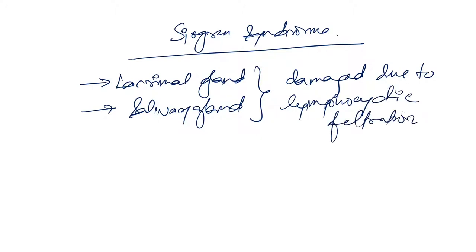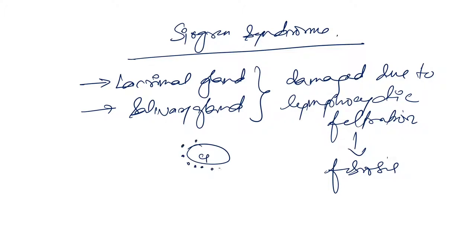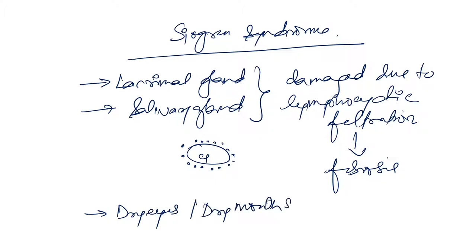This lymphocytic infiltration leads to fibrosis of the gland. The symptoms are dry eyes and dry mouth syndrome. These two together are known as sicca syndrome.